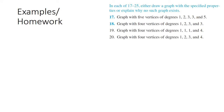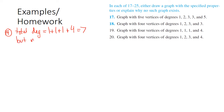Let's apply the Handshake Theorem. For problem 19, the specified degrees are 1, 1, 1, and 4, which sum to 7. But no graph can have an odd total degree — we just talked about that. So there is no graph with these properties; you can try to draw one but you won't be able to.